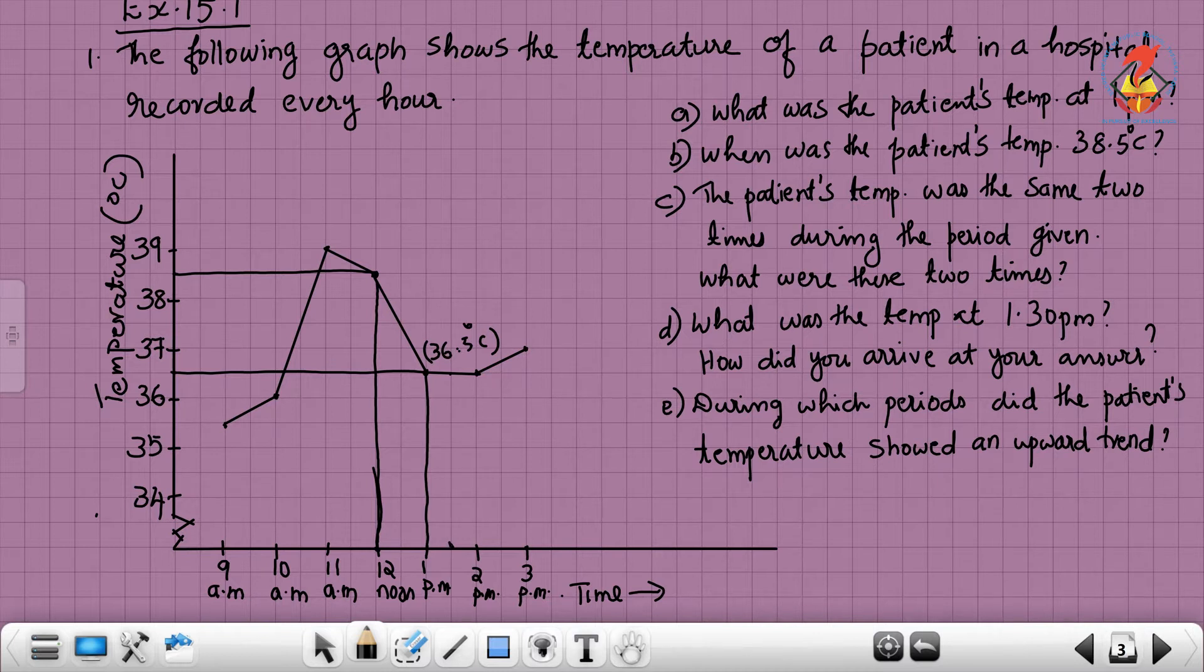What was the temperature at 1:30 PM? 1:30 PM is between 1 PM and 2 PM. This point represents 1:30 PM. Draw a perpendicular line to the y-axis. This perpendicular line meets at this point, which represents 36.5 degrees Celsius. So at 1:30 PM the temperature will be 36.5 degrees Celsius. How did you arrive at your answer? Just draw the perpendicular to the x-axis and y-axis, and you will get 1:30 PM and 36.5 degrees Celsius.